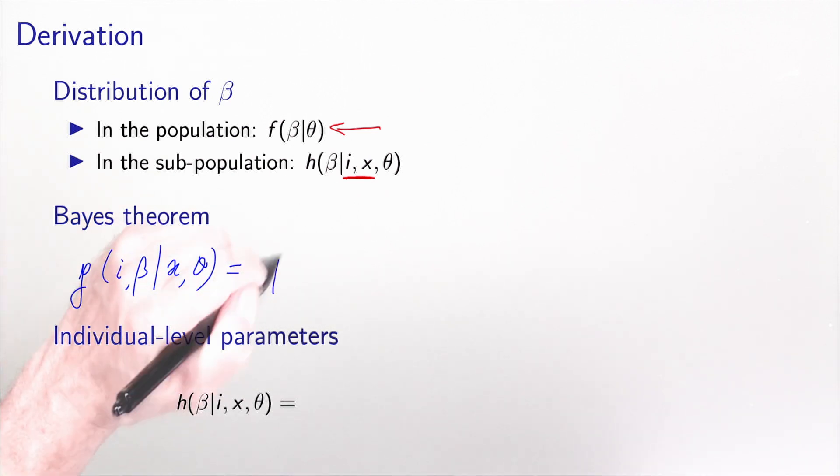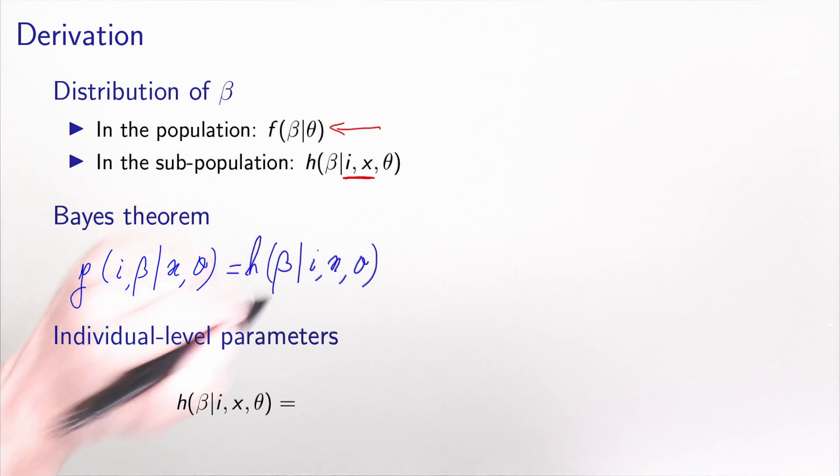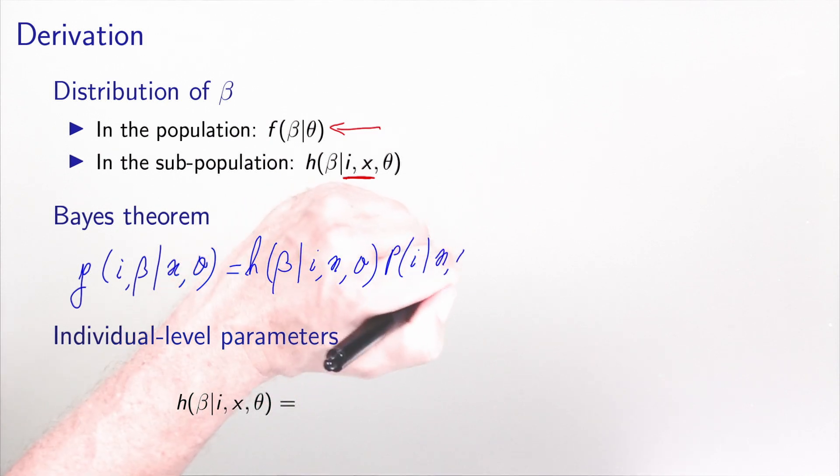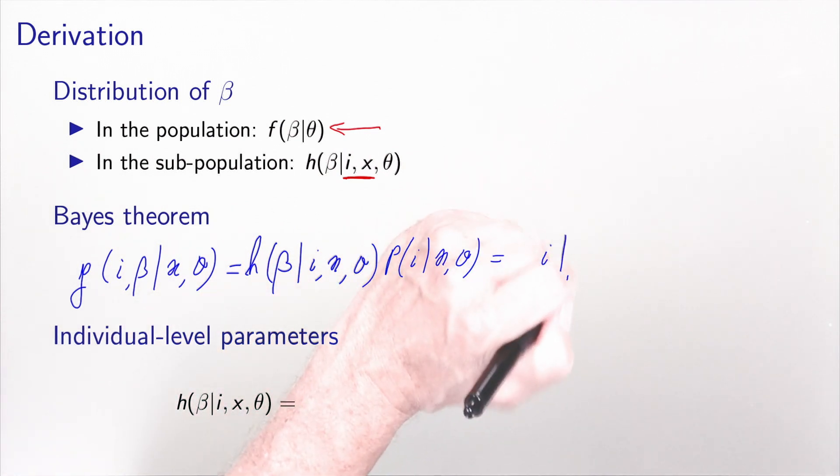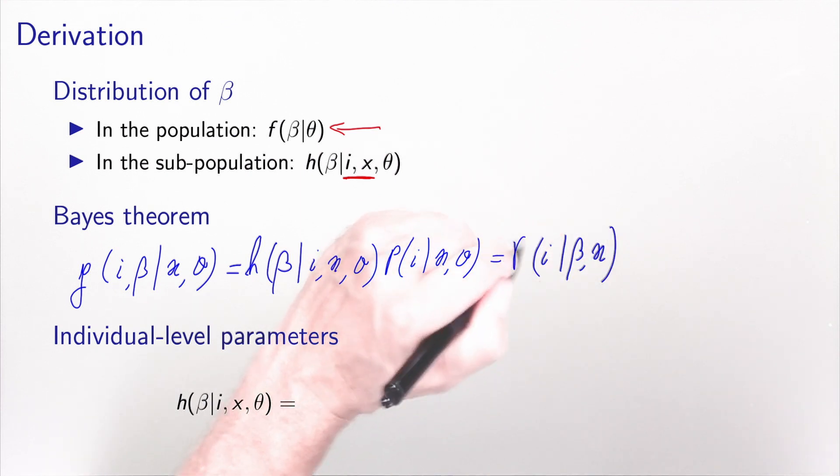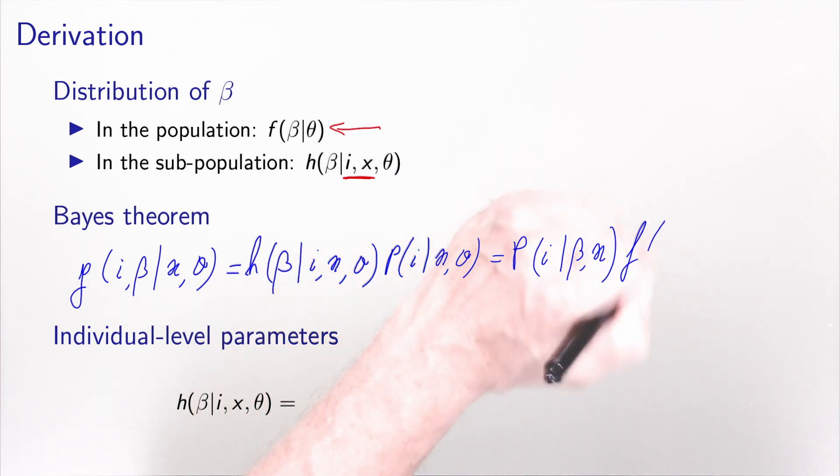I can write it as the distribution of beta given i, x and theta. So this is what I've called h, times the probability of i given x and theta. But I can do it in the other direction as well. I can write it as the probability of i given beta and x. I have no theta here. I call it p times f of beta.